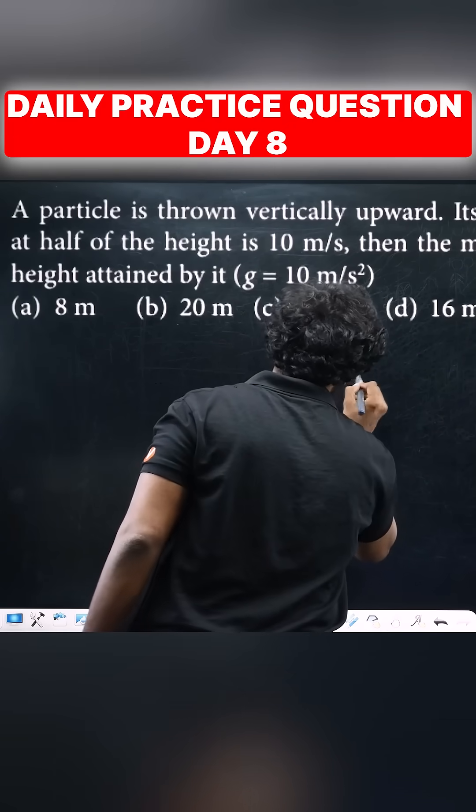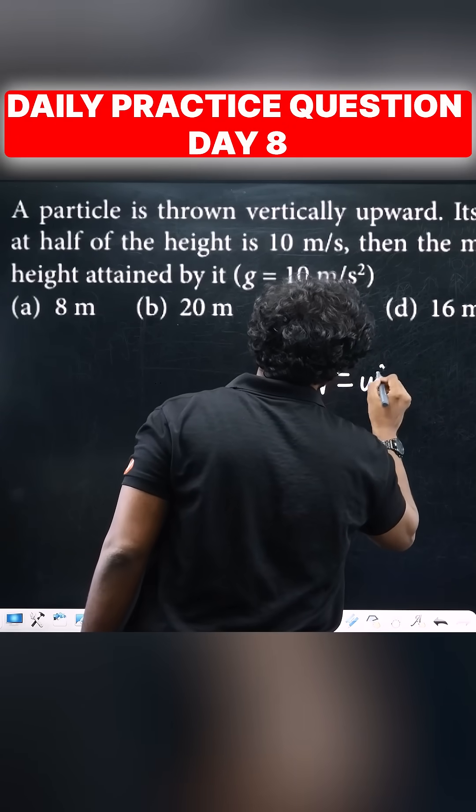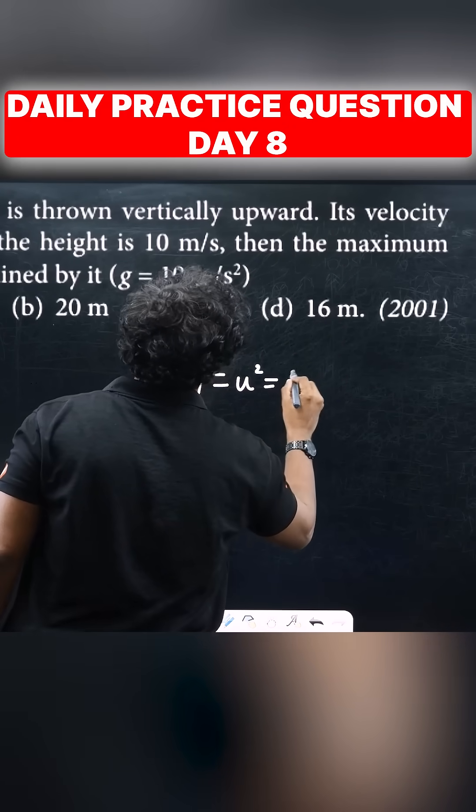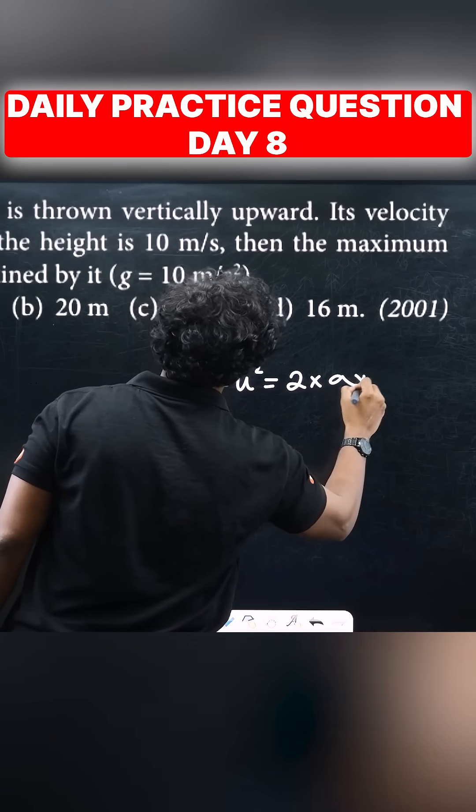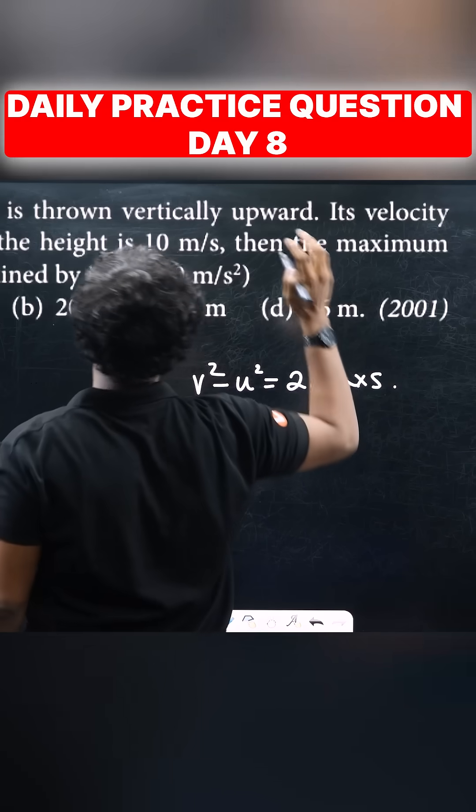V squared minus u squared equals 2 into a into s.